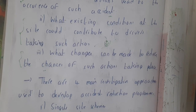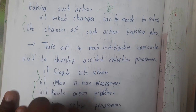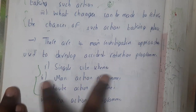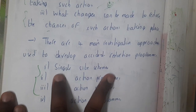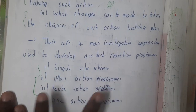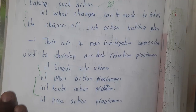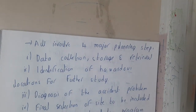We also have four different approaches. An in-depth explanation is not in our syllabus, so we won't go into detail. The four approaches are: single site, schema mass action program, route action program, and area action program. These are the four different approaches which you can use for investigation.